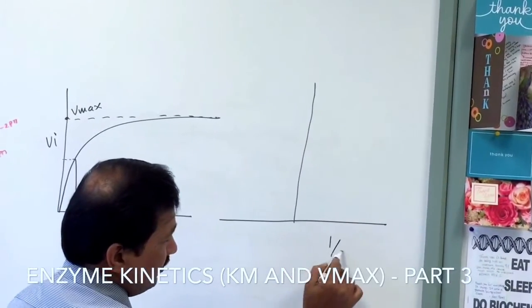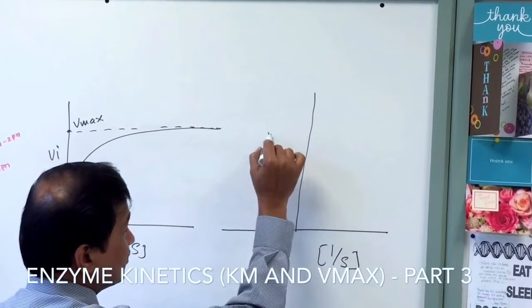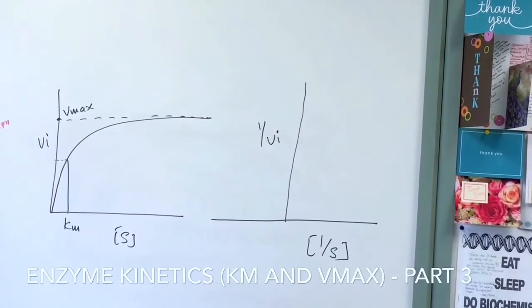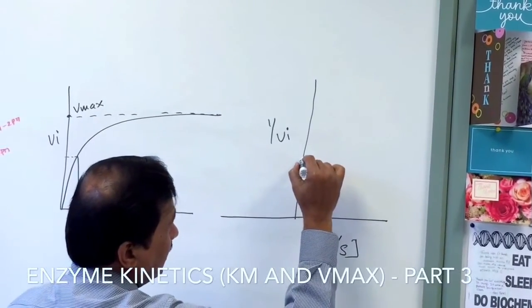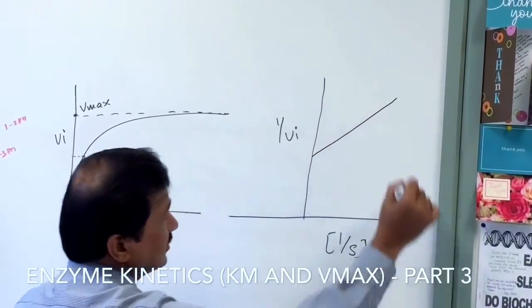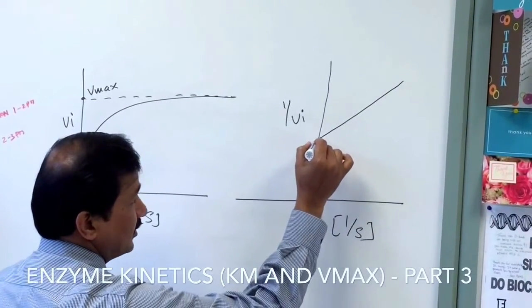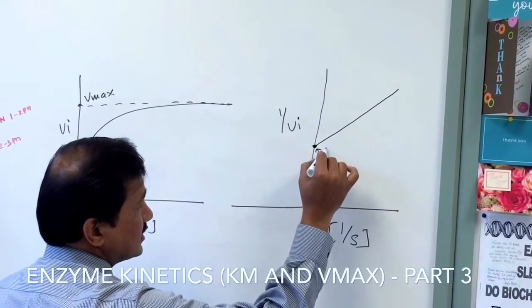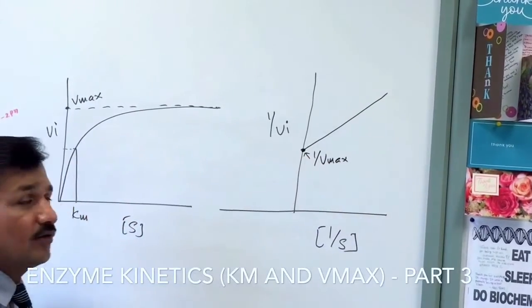The x-axis is 1 over substrate concentration. The y-axis is 1 over Vi, the initial velocity of the reaction. The line goes like this - there is a straight line indicating the velocity of the reaction, and it meets somewhere on the y-axis here. That particular point we call 1 over Vmax.